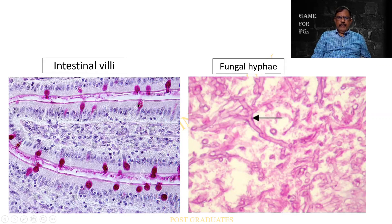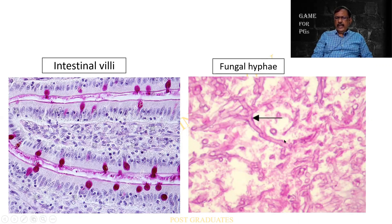Look at these couple of pictures — this is the intestinal villi which is taking up the magenta stain. Normally we will be using the appendix as a control for the PAS stain. In this case, I hope you appreciate the fungal hyphae. Normally in any of our slides, we will not be able to see this many hyphae — because this is a culture in which I am able to see the sporangium, the conidiophore, and the hyphae. All three are seen.